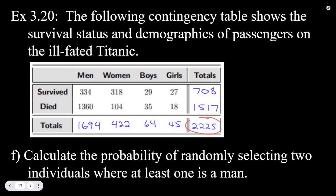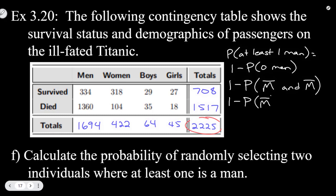For letter F, calculate the probability of randomly selecting two individuals where at least one is a man. So probability of at least one man, remember that's one minus the probability that there are zero men. So one minus, that would mean the probability of not getting a man and not getting a man again. Which means it's the probability of not getting a man times the probability of not getting a man given that you already didn't get a man the first time.